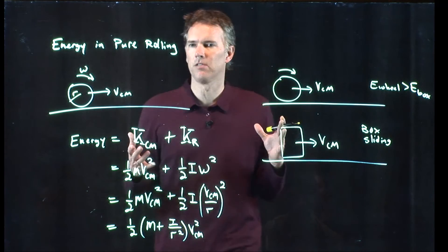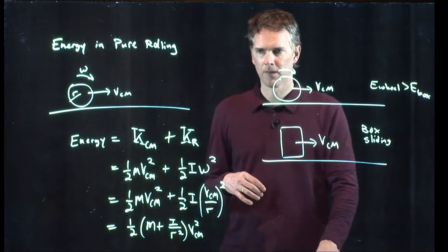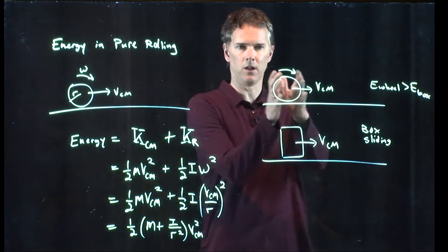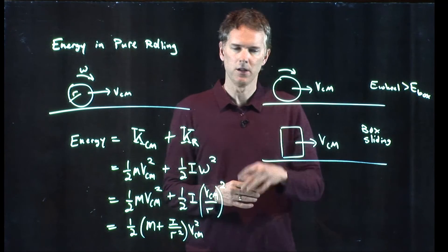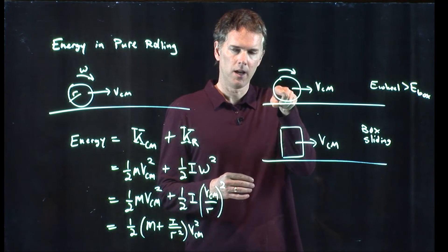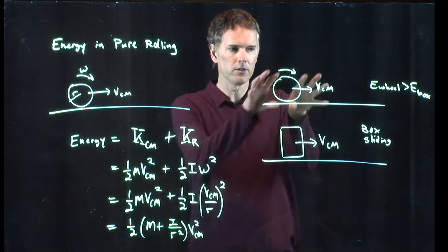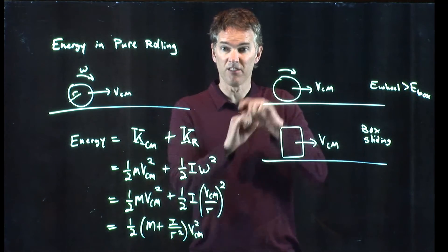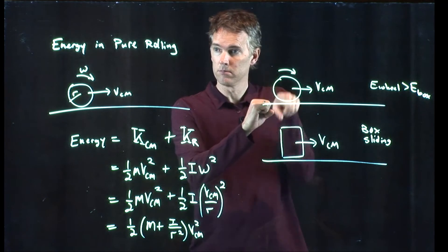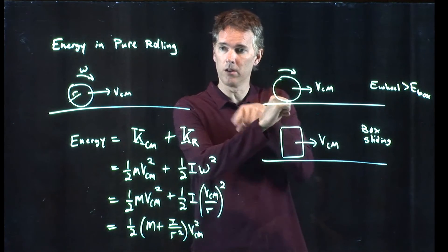And this should make sense to you. Why should it make sense? Because pretend you started moving along with the wheel. You saw this wheel rolling along and you were in a car driving next to it. To you, it doesn't look like it's moving anywhere, but it's certainly rotating, right? And so it looks like a stationary wheel that is rotating.